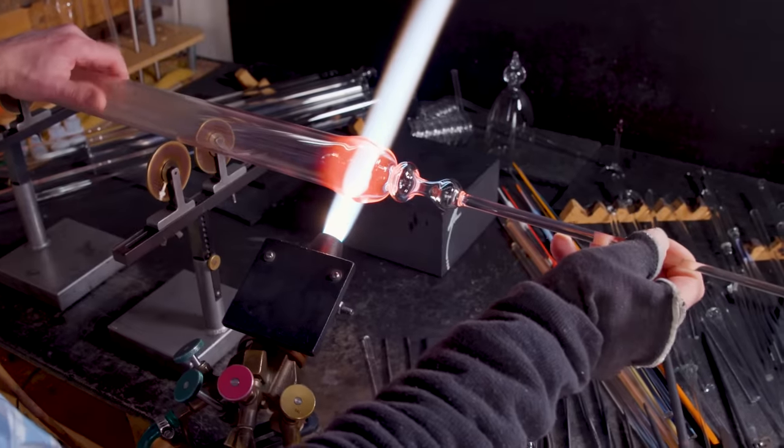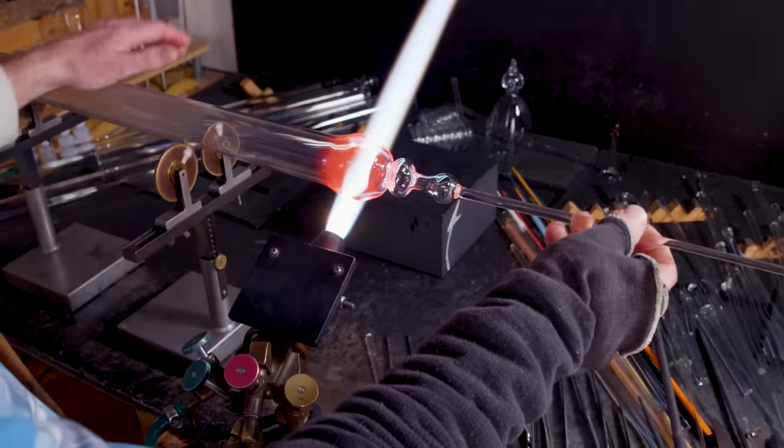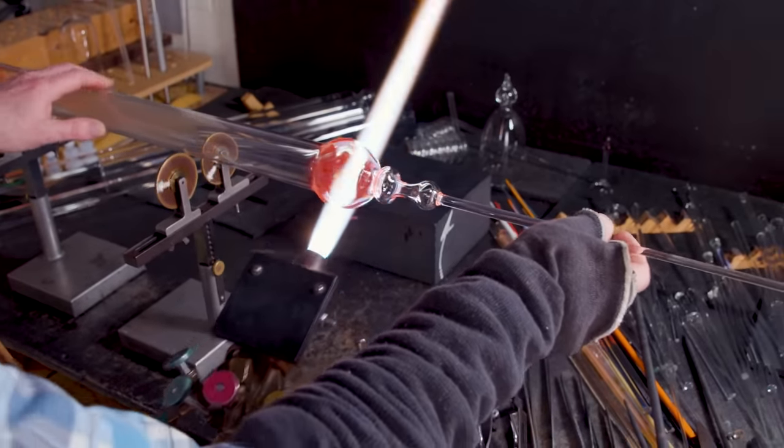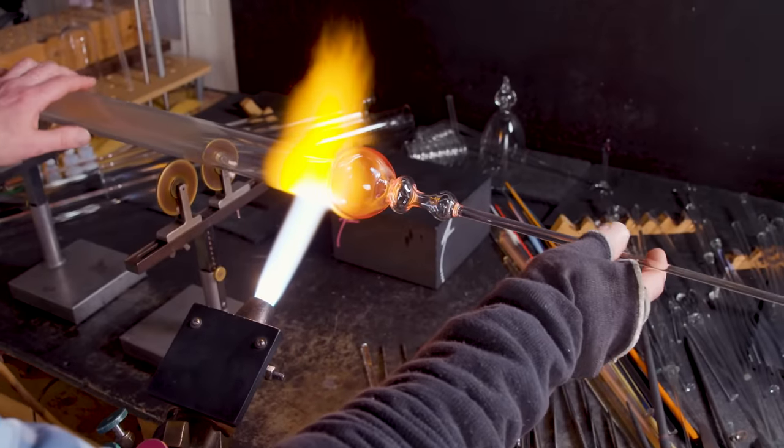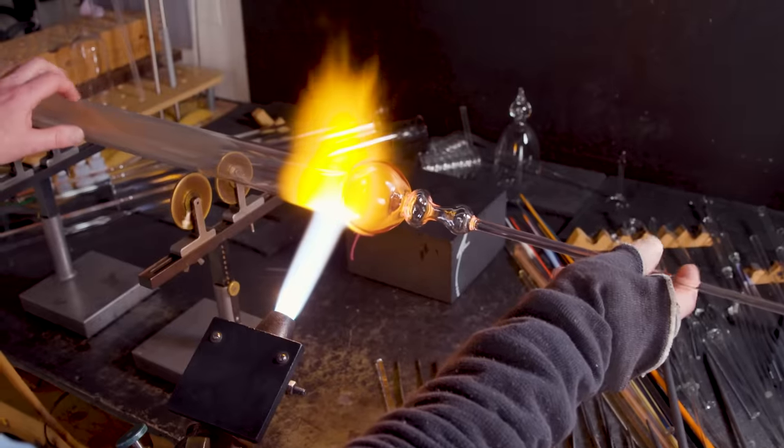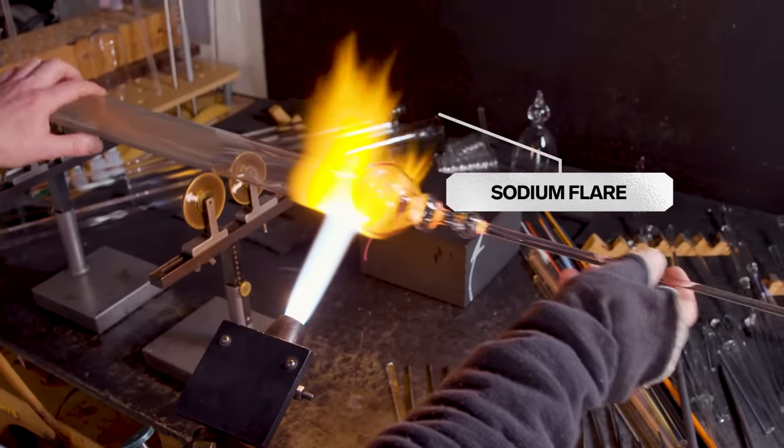When the flame is blue, it is the absolute hottest it can be. Because at that point, you're burning two parts oxygen to one part gas. The sodium that's in the glass is what's burning off. That's the bright yellow you see. It's called the sodium flare. So the glass is actually giving some of its life away.